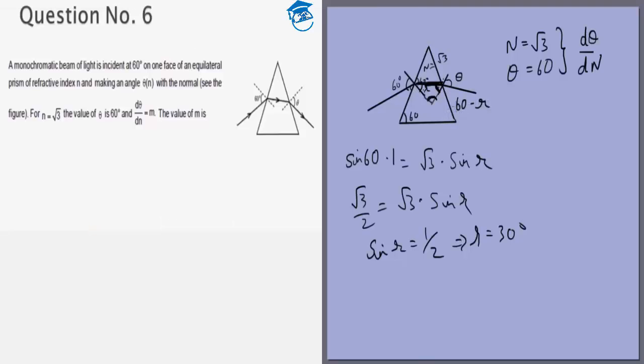So we can write the equation n times sin of 60 minus r equals sin theta.